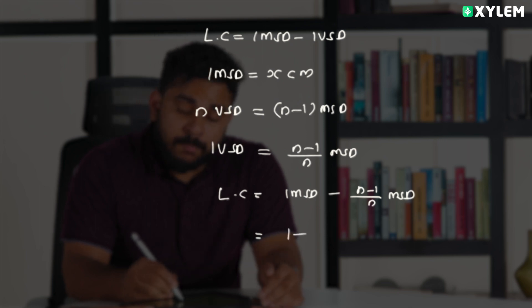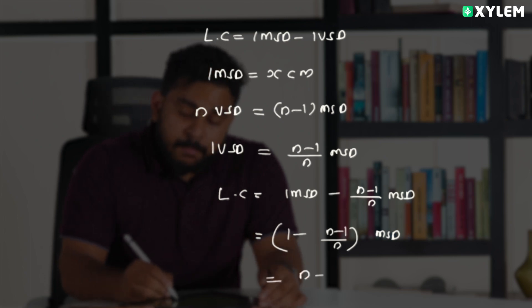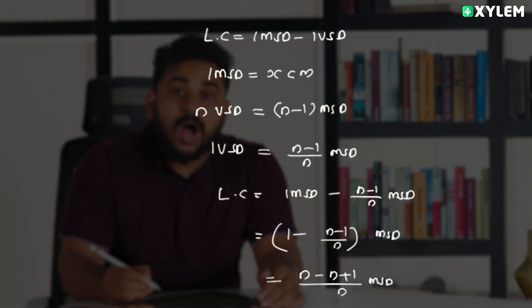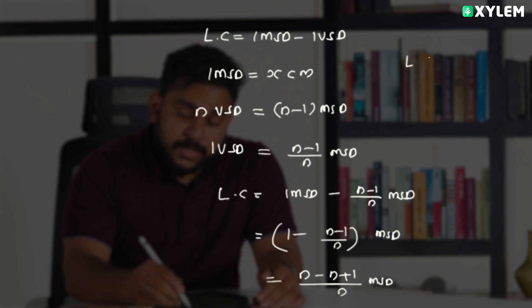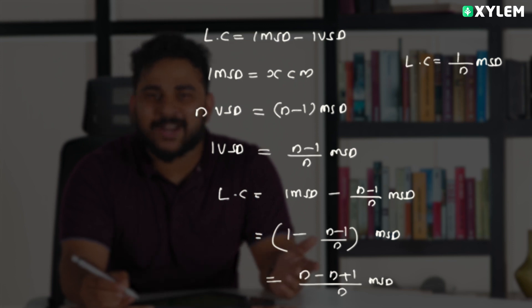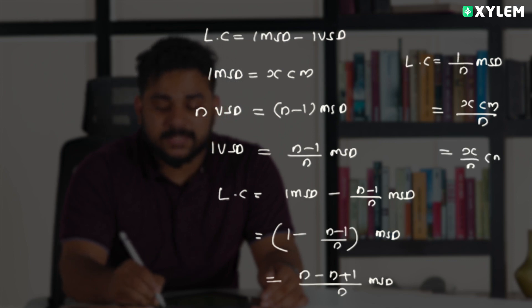Taking MSD as common: least count = MSD times [1 minus (n-1)/n] = MSD times (1/n). Since one MSD equals x cm, the least count equals x/n cm.